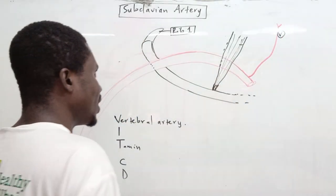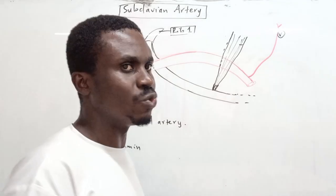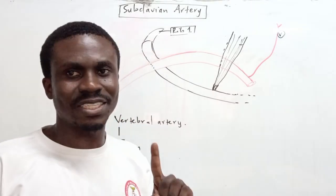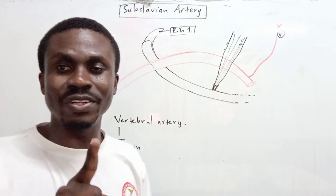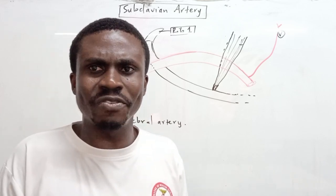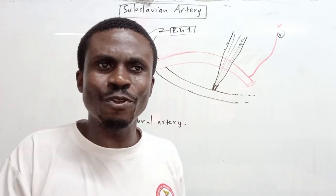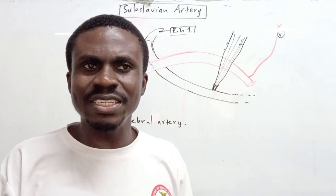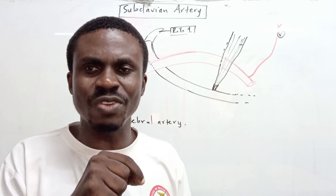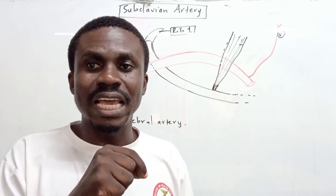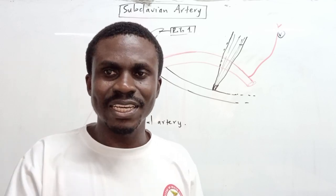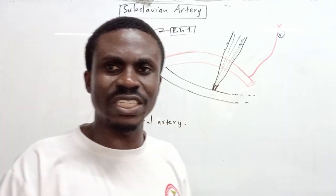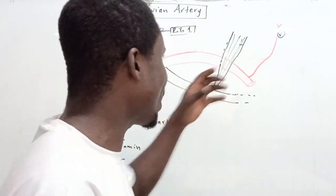The vertebral artery runs through the transverse foramina of the upper six cervical vertebrae — not the seventh. The seventh cervical vertebra either lacks a transverse foramen or it is so small that the vertebral artery cannot pass through it, and that is why it doesn't run through C7.